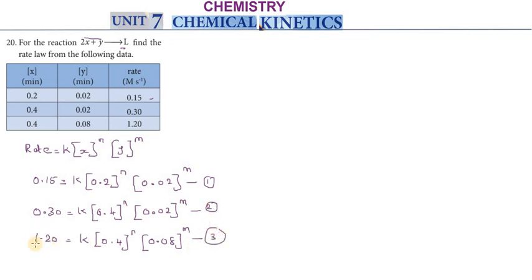Now, divide equation 3 by equation 2. When we divide 3 by 2, this value cancels and k cancels.